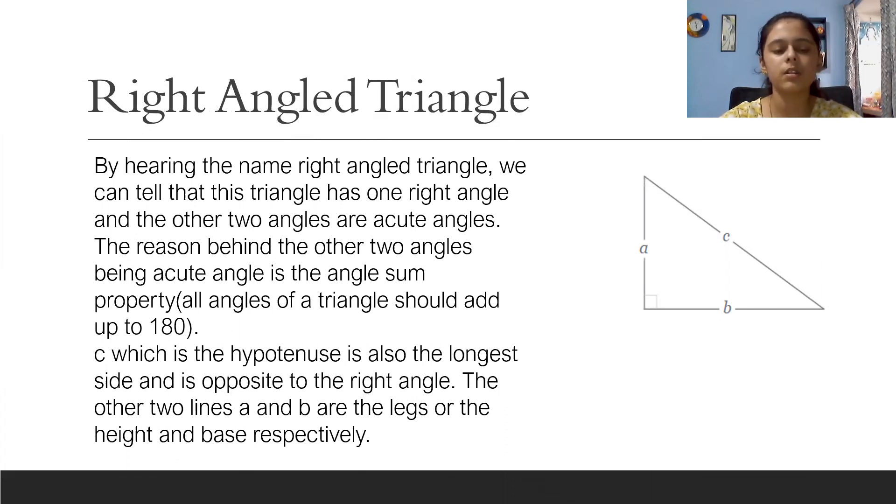C, which is the hypotenuse, is also the longest side and opposite to the right angle. The other two lines a and b are the legs or the height and the base respectively.